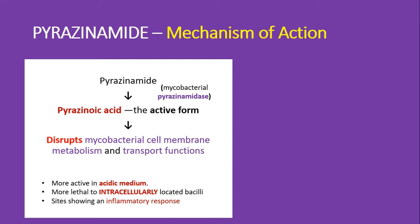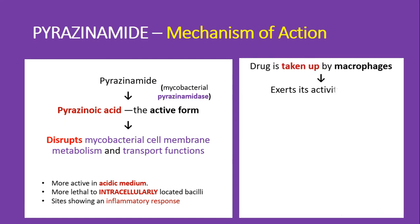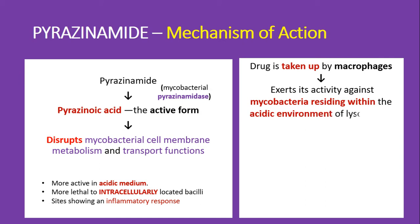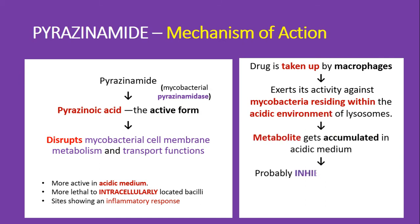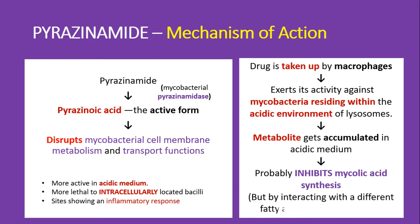Pyrazinamide has good activity against inflammatory sites, probably because of the presence of an acidic medium. It is taken up by macrophages, and within the macrophages where mycobacteria reside, pyrazinamide exerts activity against mycobacteria residing within the acidic environment of the lysosomes. There it gets converted into pyrazinoic acid by mycobacterial pyrazinamidase, and the metabolite accumulates, inhibiting mycolic acid synthesis.